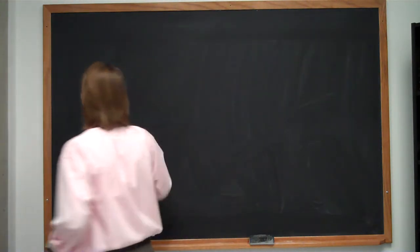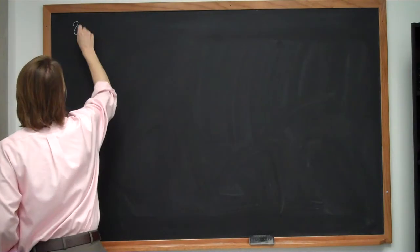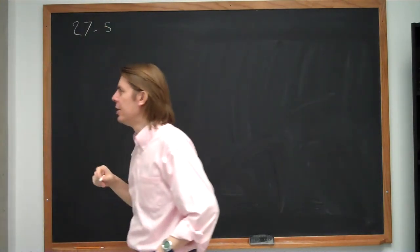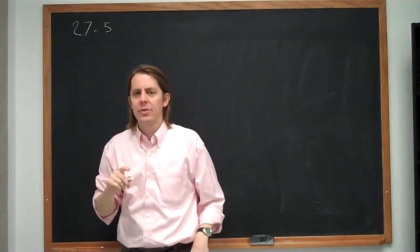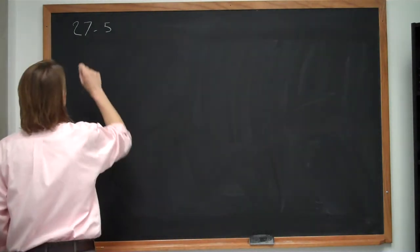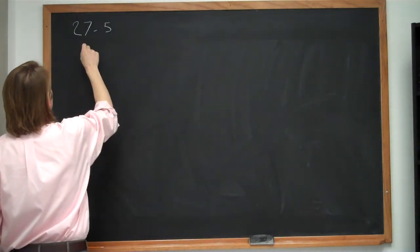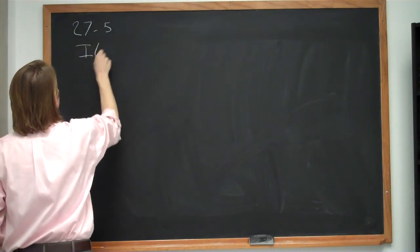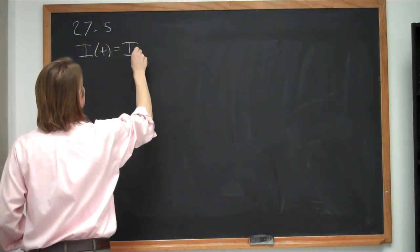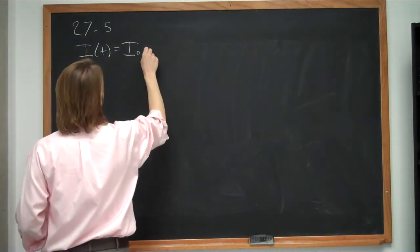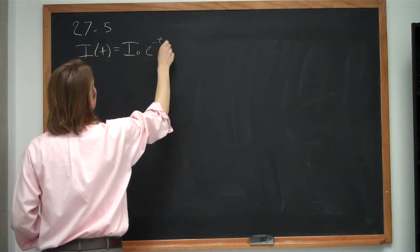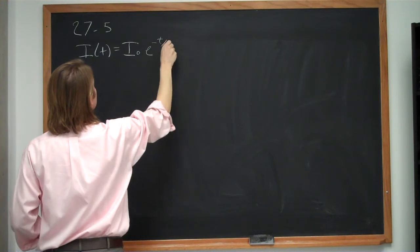This is problem 27.5 from the suggested problems. In this problem, instead of a constant current, we have a wire where the current as a function of time is going through exponential decay: I(t) = I₀ e^(-t/τ), where I₀ is the initial current and τ is a time constant.